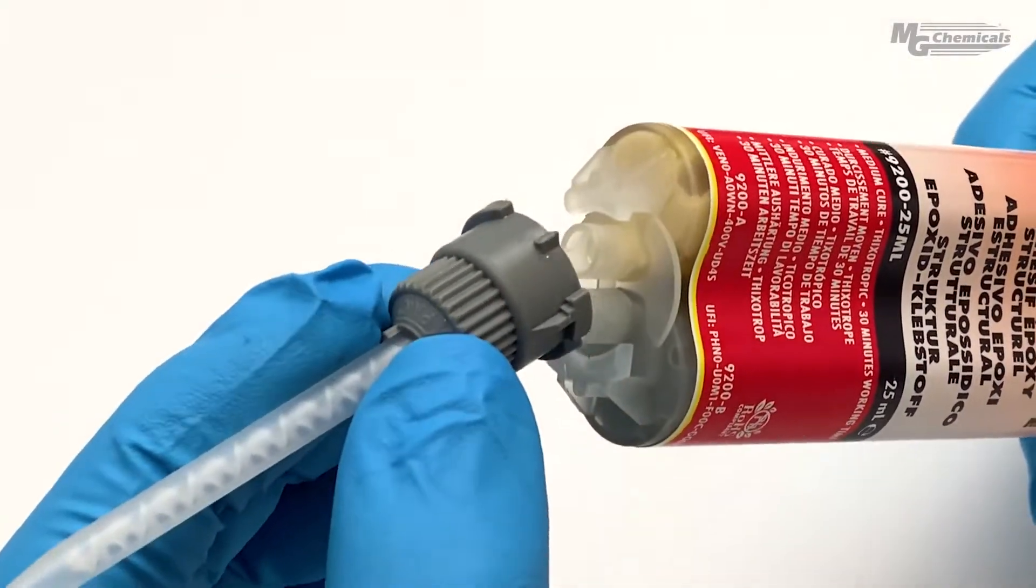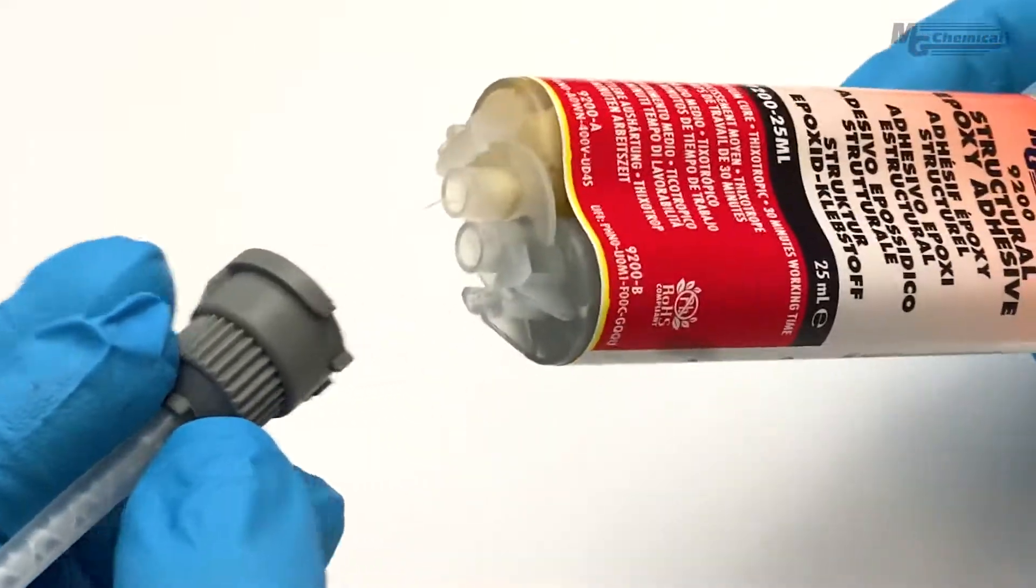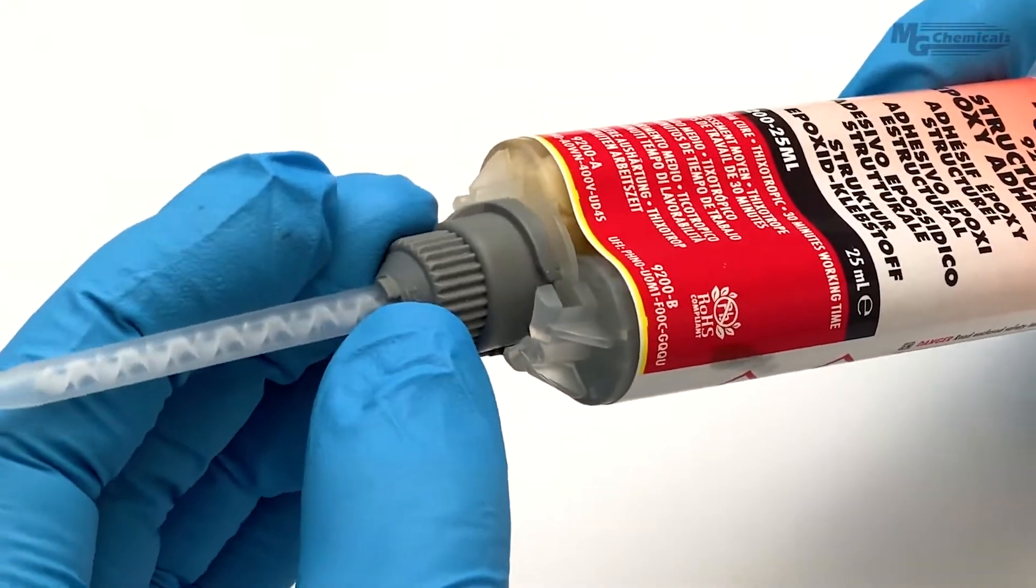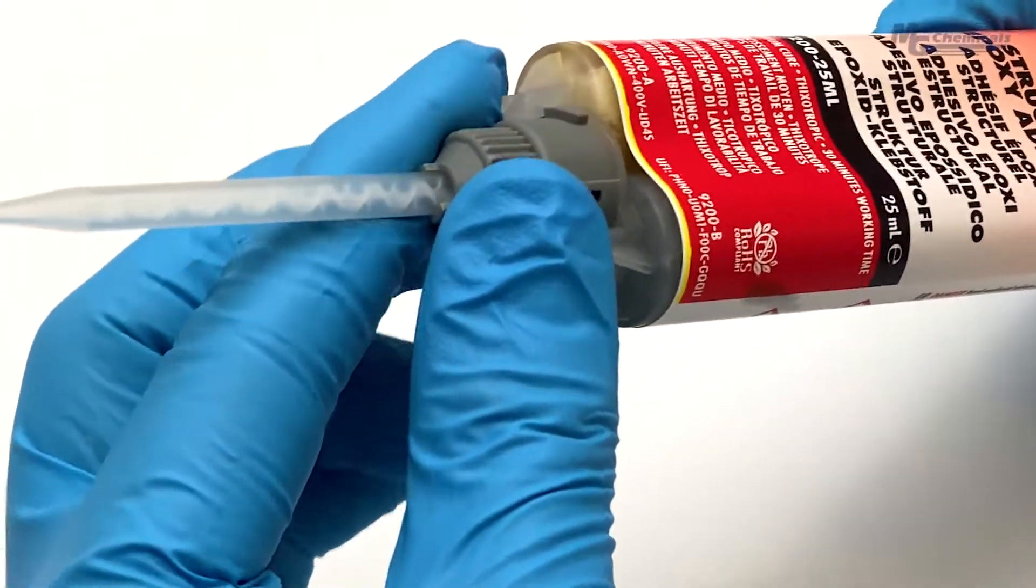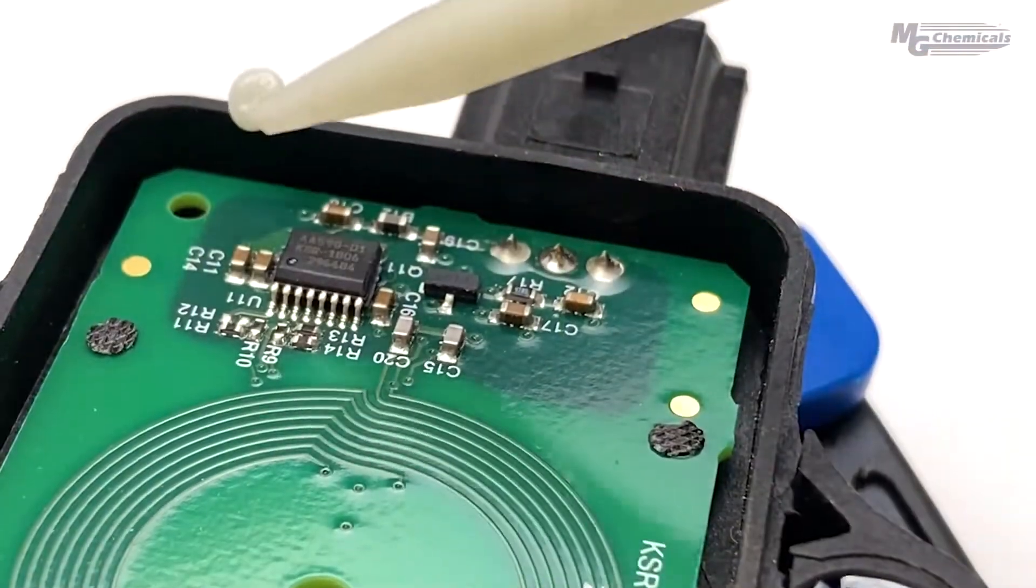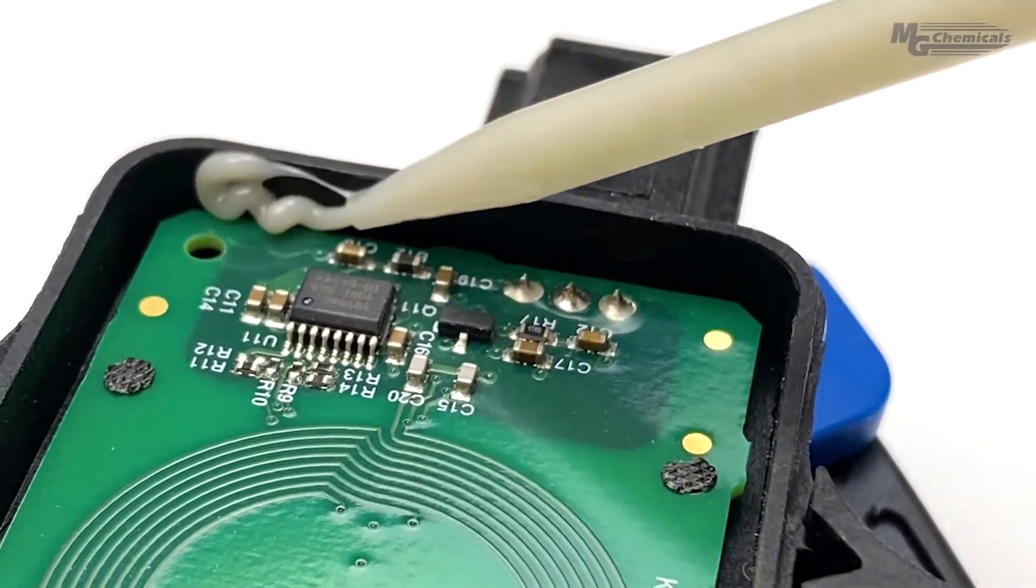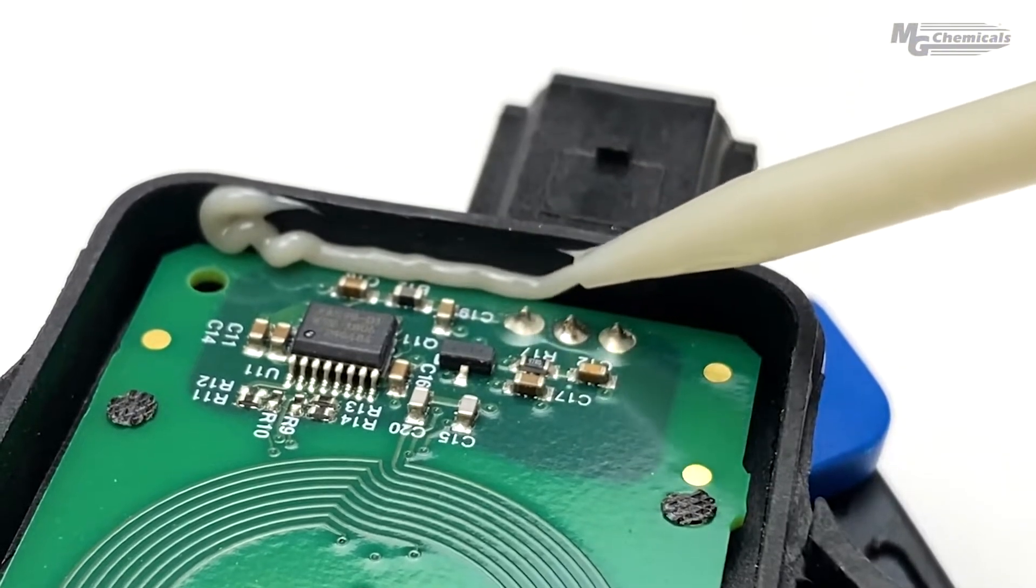To do this, line up the ridge on the tip with the notch on the cartridge and twist into place. We can now simply dispense the product without the need to measure or mix the two components.